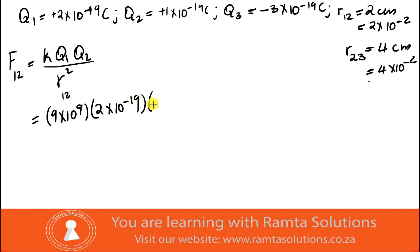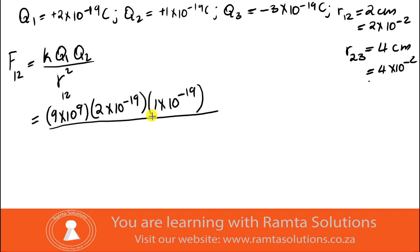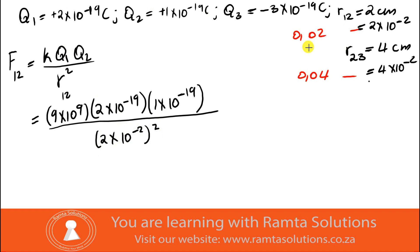Substituting the values: q1 is 2×10⁻¹⁹, q2 is 1×10⁻¹⁹, and the distance between them is 2×10⁻², all squared. Remember, two centimeters is 0.02, so squared gives 0.0004. It's up to you whether you convert straight away or substitute as I did here.